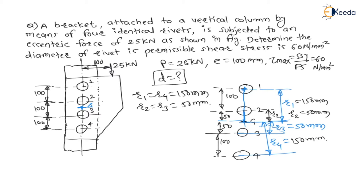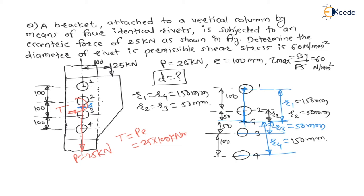Now consider all these rivets. The force P of 25 kN can be directly transferred to the centroid of the rivets. But along with this force, we have to transfer the torque created by this force about the centroid. So we put the force of 25 kN at centroid in the vertically downward direction, and also transfer the torque T = P × E = 25 × 100 kN·mm.